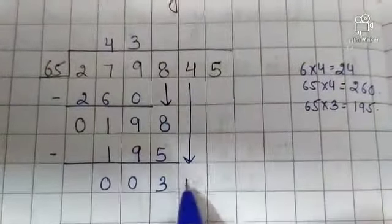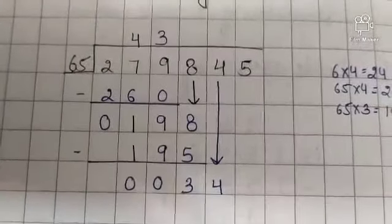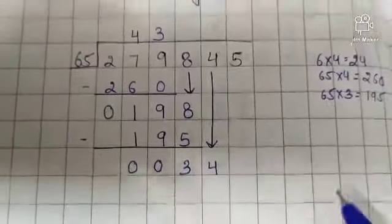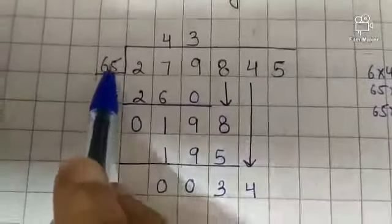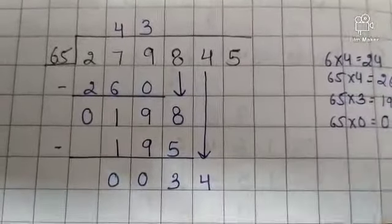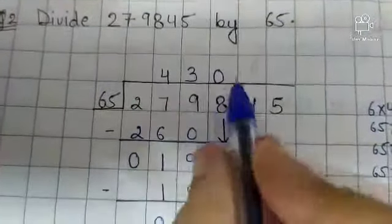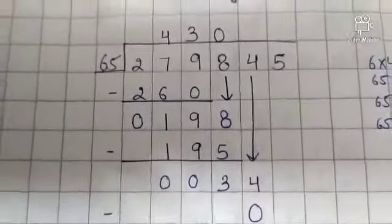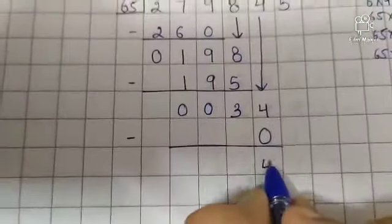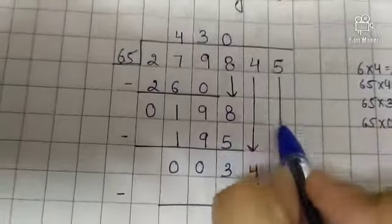Now bring down this 4. Now the number is 34. See, 6 fives are 30 and 30 is smaller than 34, so multiply 65 by 0. 65 zeros are 0. Write 0 in quotient. Then subtract it, so 34 minus 0, the number is 34. Now bring down this 5.